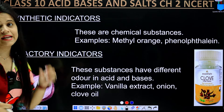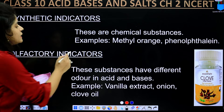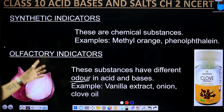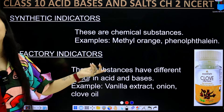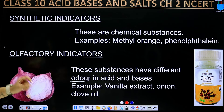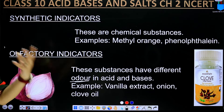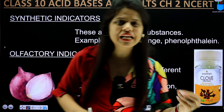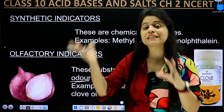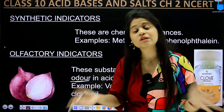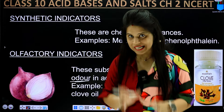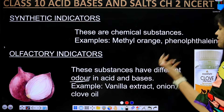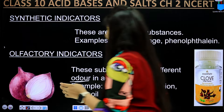Let's talk about olfactory indicators. These substances have a different odor in acid and in base — it is based on their smell. There will be some reaction in acid and in base. Like onion — everyone has seen onion, everyone knows onion has a smell. So when we add it in acid, the smell is retained or strong; when we add it in base, the smell goes away. Examples of olfactory indicators include vanilla extract, onion, and clove oil.